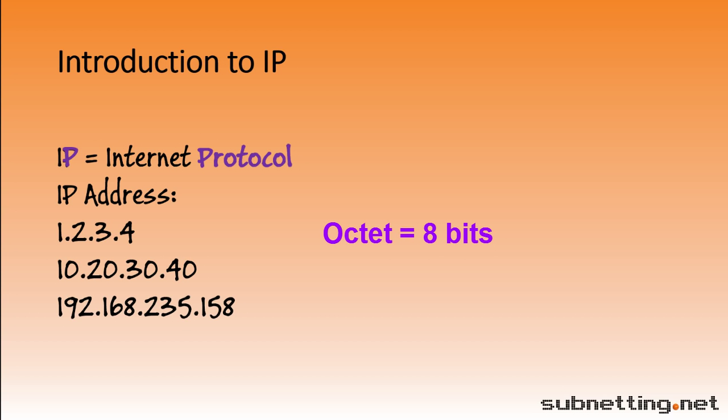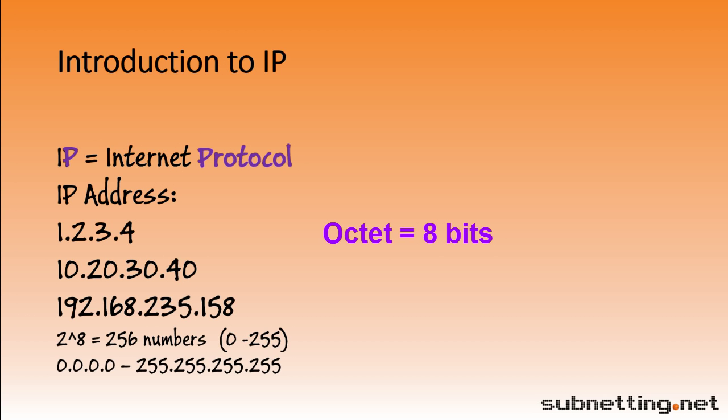You don't need to know what a bit is right now — bits are covered in the next lesson. All you need to know for now is that if a number has eight bits, that means there are 2 to the 8th power different possible values that number can have. Two to the eighth is 256. Since each number in an IP address can start with zero, the total range of numbers is 0 to 255 — that's 256 total numbers. The full range of all possible IP addresses is 0.0.0.0 to 255.255.255.255.